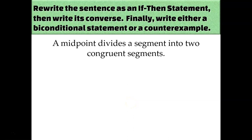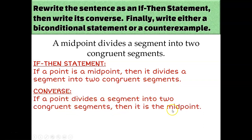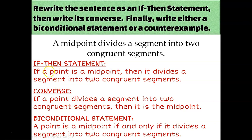Try this last one on your own: 'A midpoint divides a segment into two congruent segments.' One verb — 'divides.' Conditional: if a point is a midpoint, then it divides a segment into two congruent segments. Converse: if a point divides a segment into two congruent segments, then it is the midpoint. Can you prove that wrong? No — if a point divides a segment in half, it has to be the midpoint. So our biconditional statement is: a point is a midpoint if and only if it divides a segment into two congruent segments.